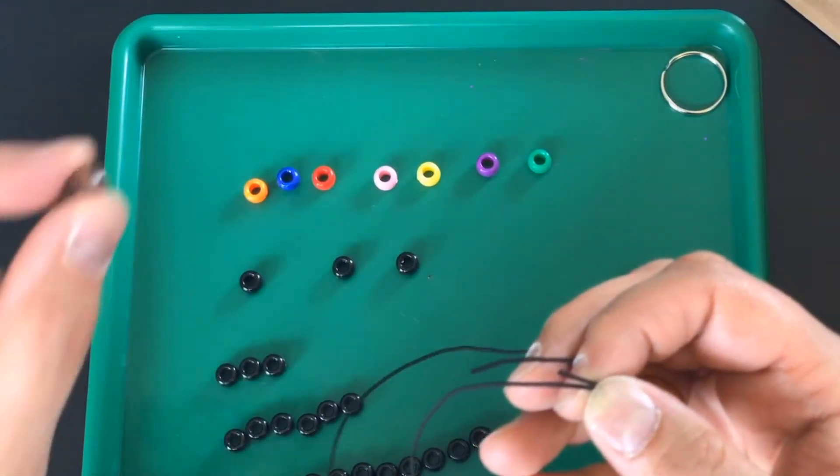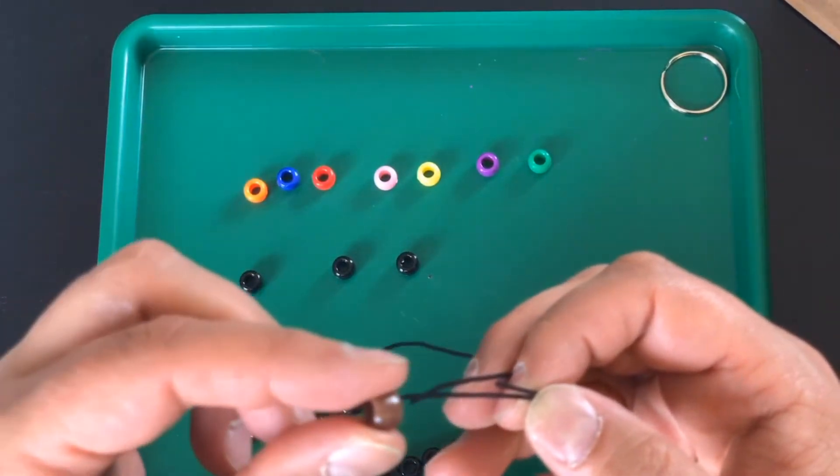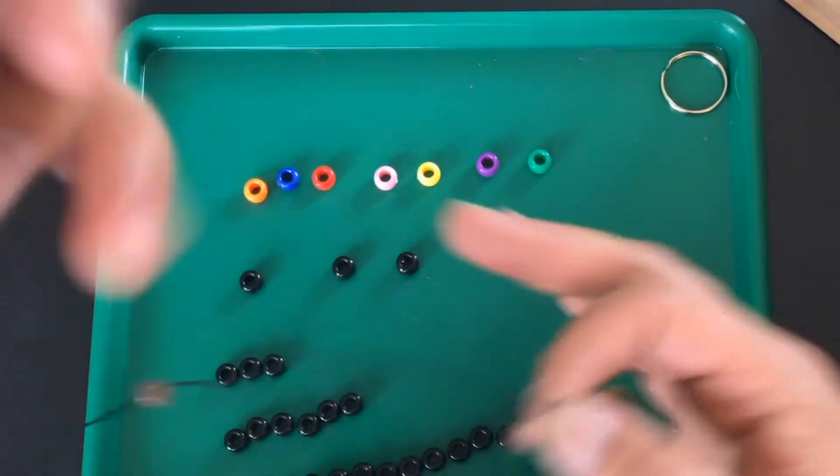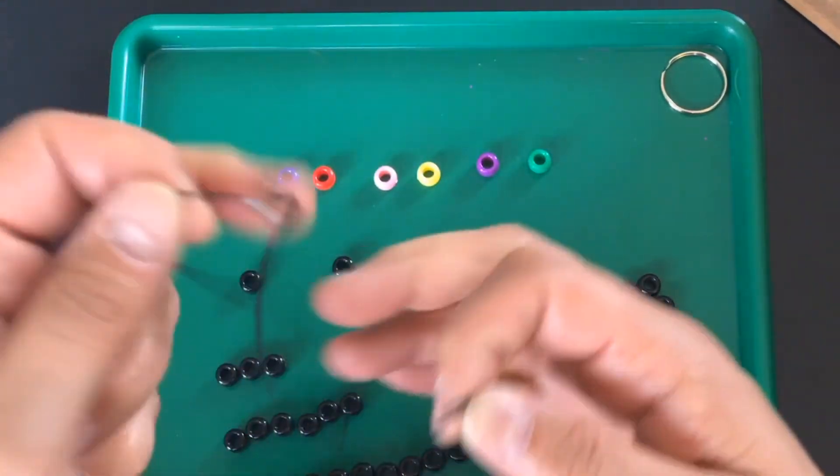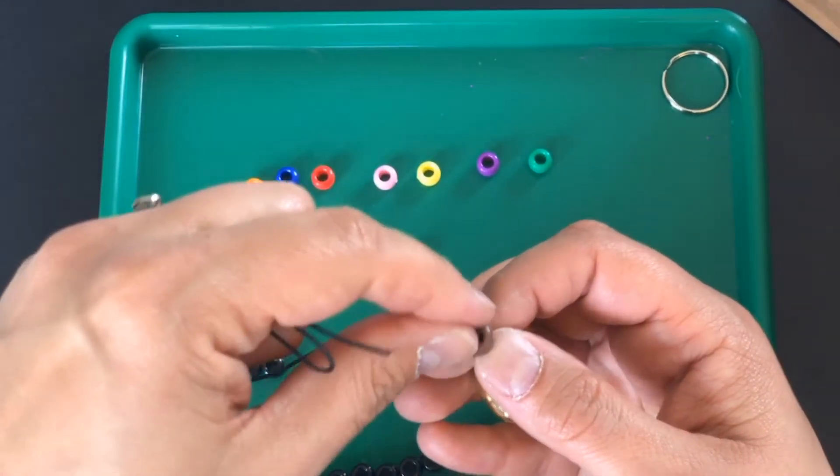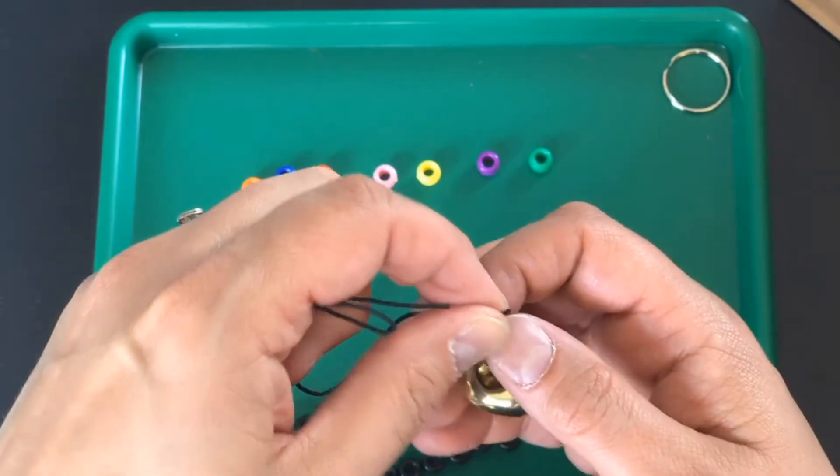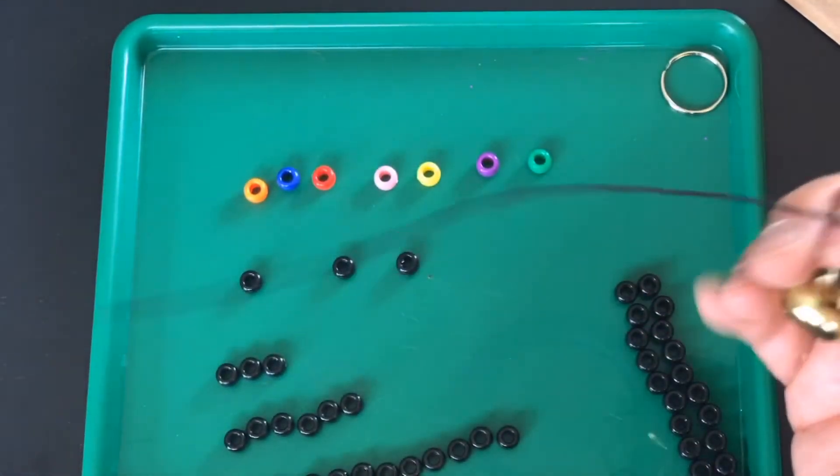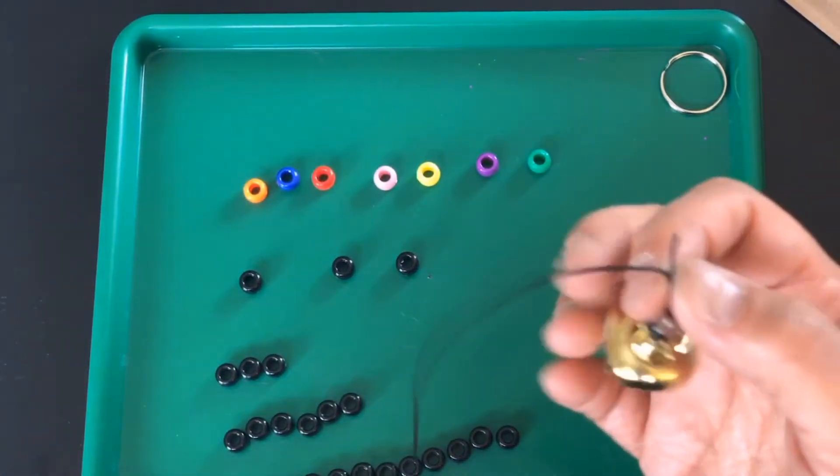You can see I put that around the extra bit of string there. Then the first planet is going to be Mercury, the brown bead. So I'm going to slide Mercury on here and I'm being careful not to drop my string because I will drop my beads. This is someone who's speaking from experience.